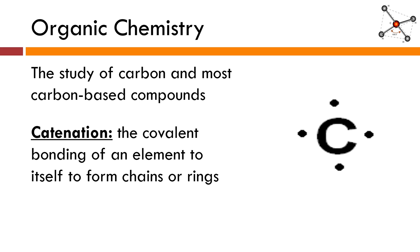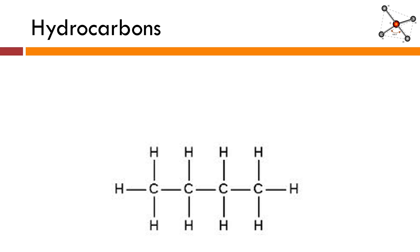So carbon is extremely unique, and there are thousands upon thousands of different molecules that are going to be organic and carbon-based. Many of the ones that we're going to talk about during this unit are hydrocarbons. The word hydrocarbon — obviously carbon is one element, and the prefix hydro, well we don't mean water here, we mean hydrogen. So hydrocarbons are compounds that contain only hydrogen and carbon.